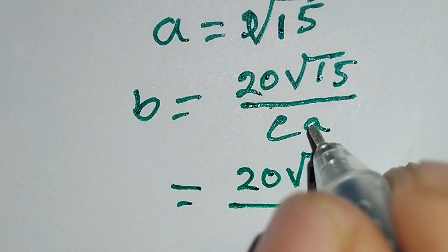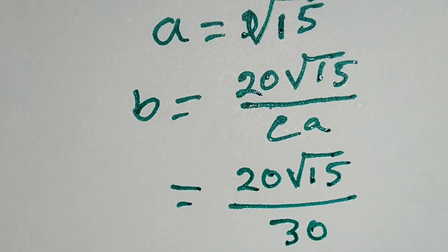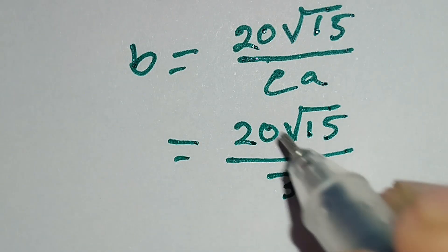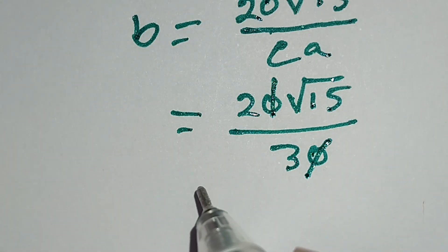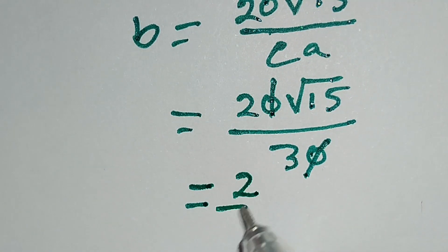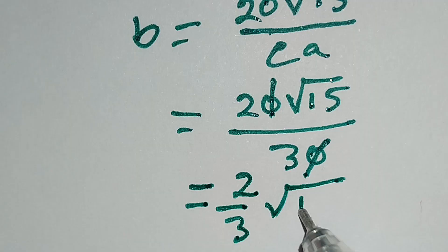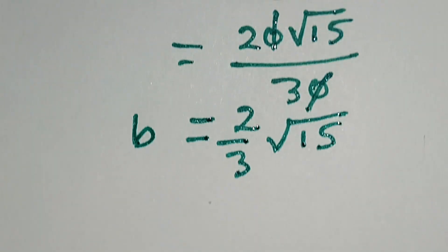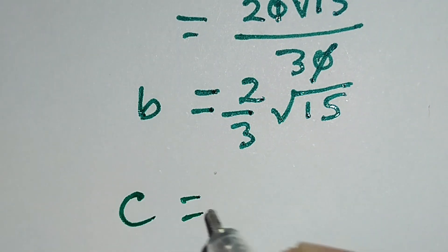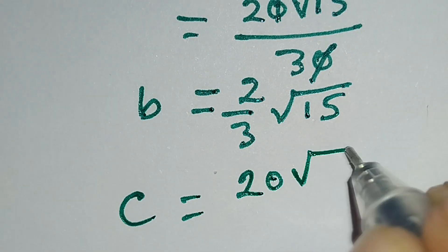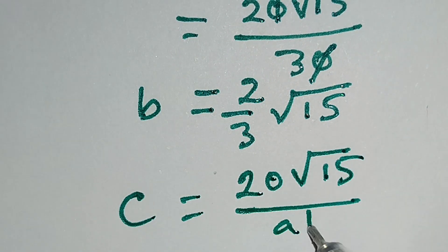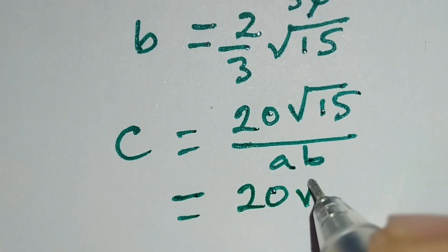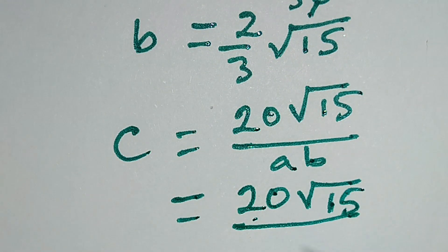CA is equal to 30. B equals ABC over CA, which is 20 square root of 15 over 30. This 0 and this 0 cancel out, giving 2 over 3 times square root of 15. So B equals 2 over 3 times square root of 15.